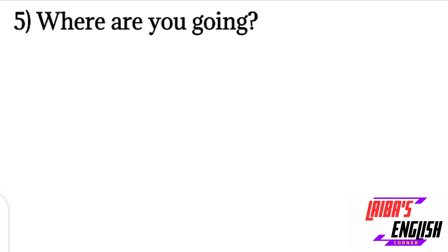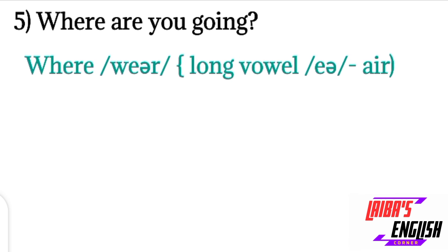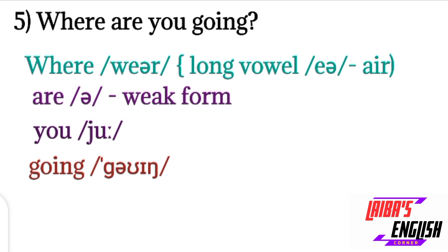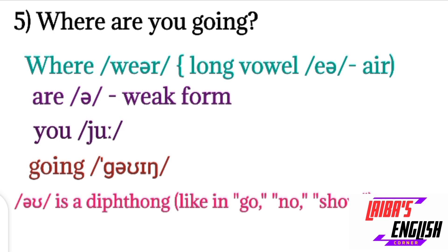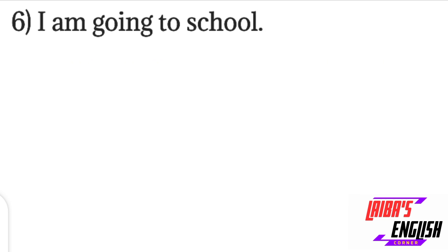The next sentence is: Where are you going? Pronounce each word individually to understand how they are pronounced. 'Where': starting with W like in 'water,' 'waistcoat,' then the 'air' vowel sound, and an R sound at the end. 'Are' is again a weak form, so it will be represented with a schwa sound. 'You' is already practiced. For 'going': G sound, then the 'oh' diphthong like in 'go,' then a short 'e' sound, and the 'ing' nasal sound at the end — like in 'king.'